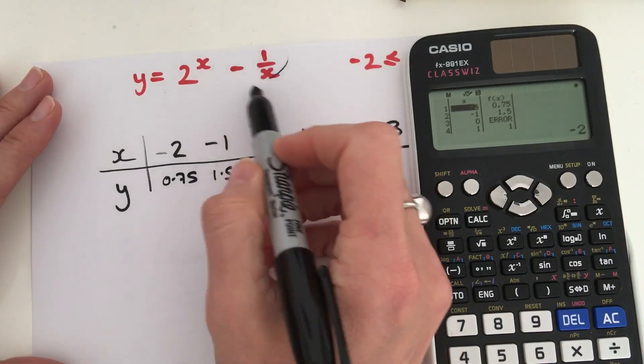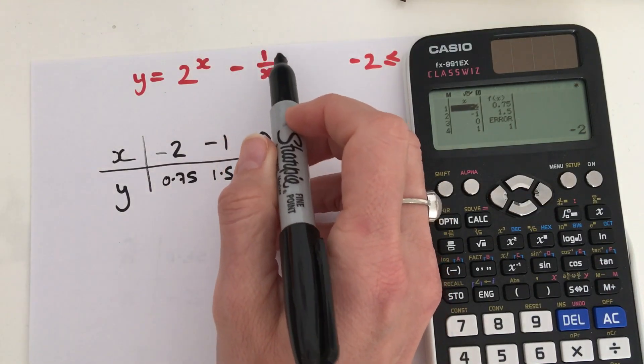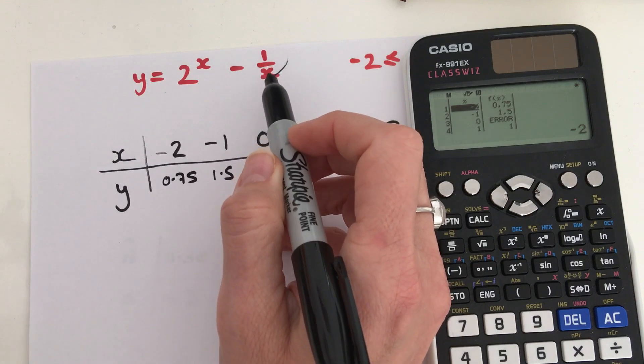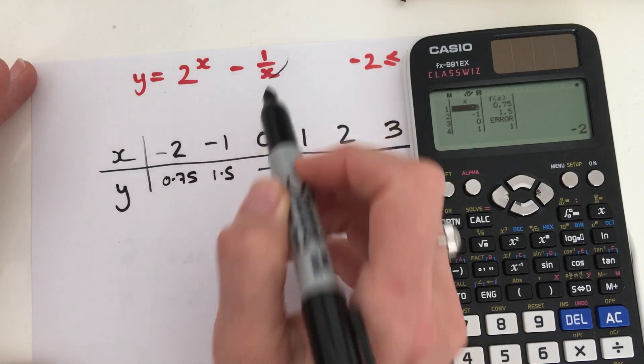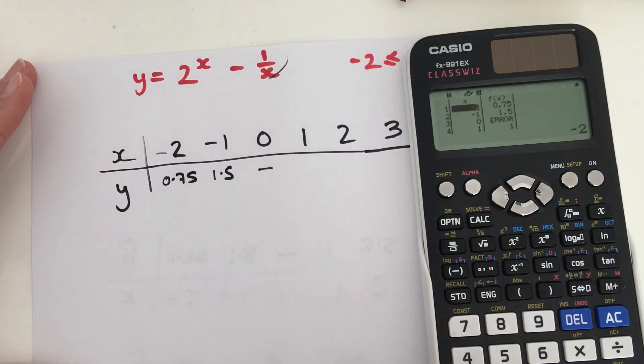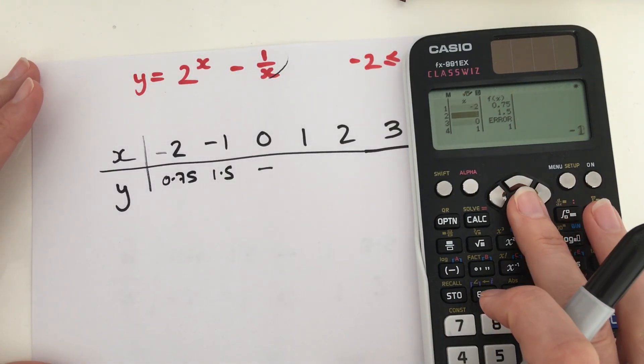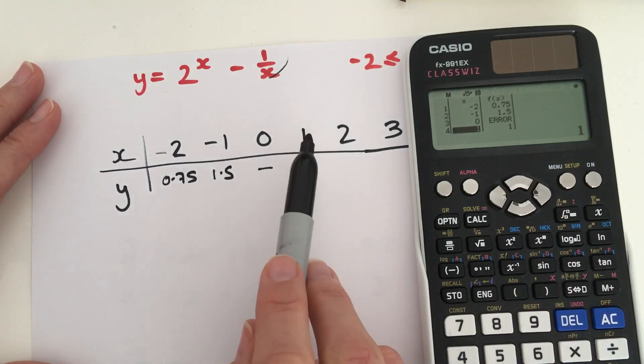And that is because if you've studied reciprocal graphs, what you should realize is that if you divide anything by 0, you get an error. On your calculator, you can't divide by 0. So, that is why we ended up with an error here. So, don't worry about that. It just means there's a break in your graph.